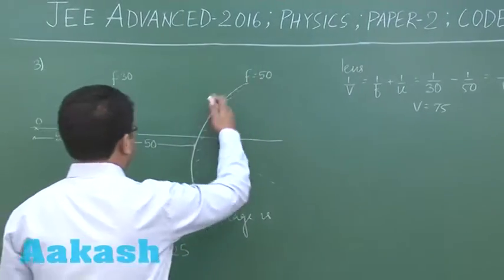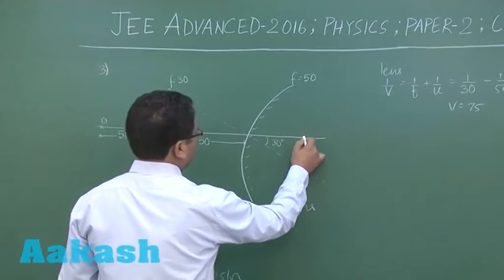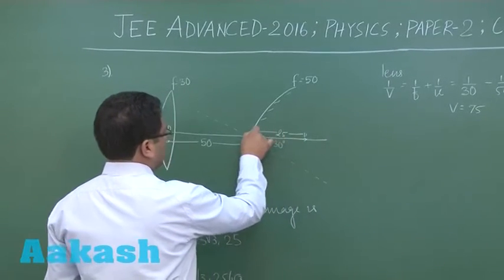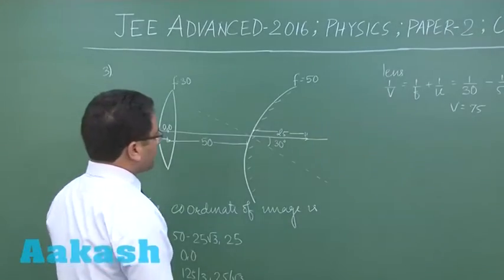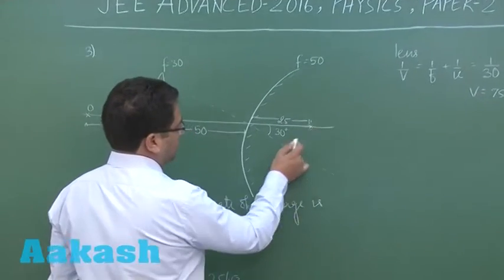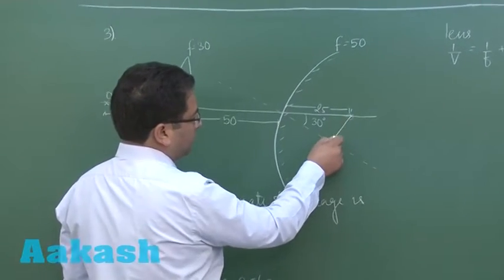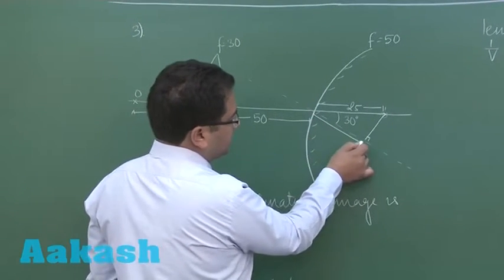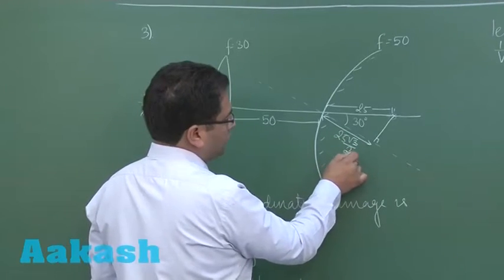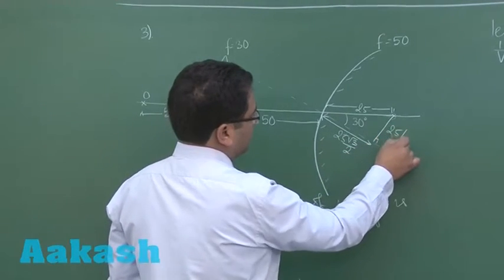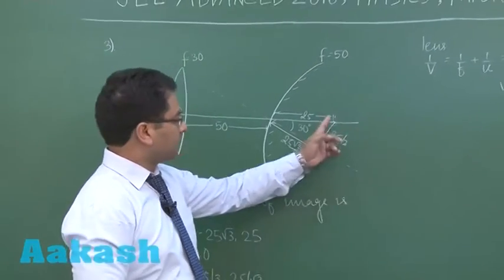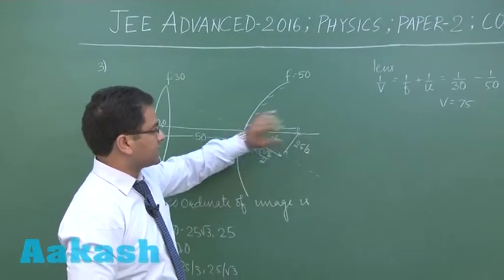Had the convex mirror not been there, the image would have formed 25 centimeters beyond the mirror. But for the mirror, this is not a point object because the principal axis is tilted. Drawing a perpendicular, the object distance is 25√3/2 and the object height is 25/2, since the principal axis is tilted and the object lies off-axis.